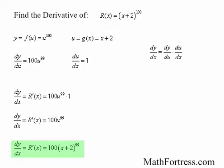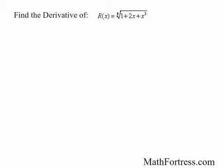Let's try another example. Find the derivative of r of x equal to the fourth root of the quantity 1 plus 2x plus x cubed. Just like the previous function, this is a composition of functions. The outer function equals the fourth root of x, which can be rewritten as x to the power of one-fourth, and the inner function equals the quantity 1 plus 2x plus x cubed.